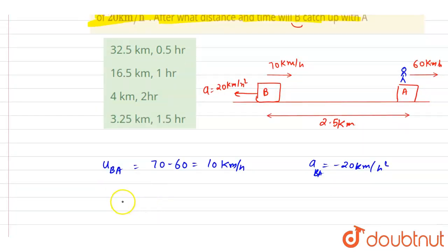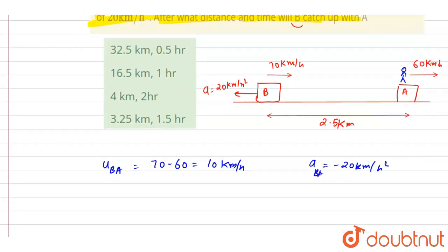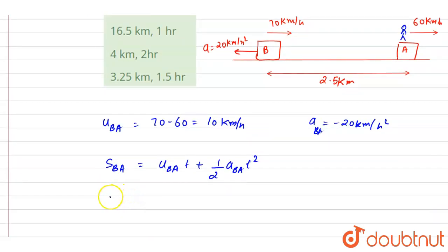So now you can just solve it. If you see, we want the distance and the time, so let us first calculate the time. So if you see, it is S_BA = U_BA × t + ½ × a_BA × t². If you see, the distance is 2.5, and the speed is 10, and acceleration is ½ × -20.